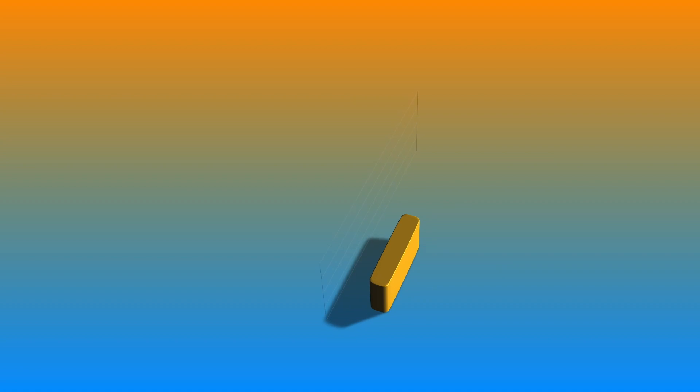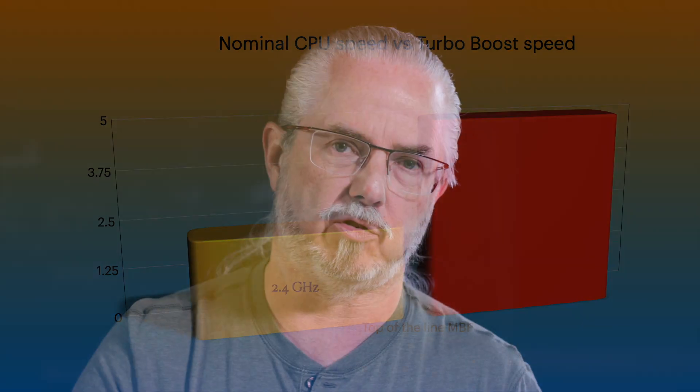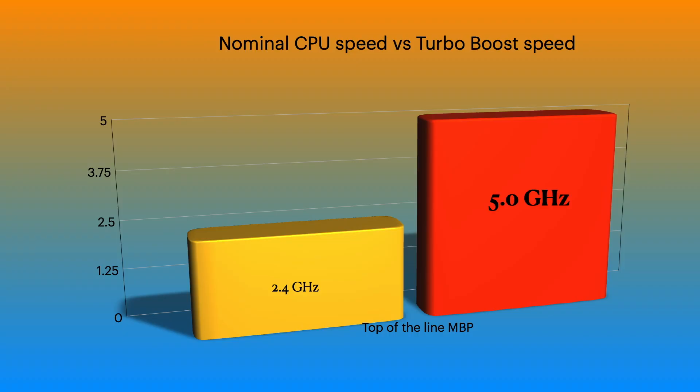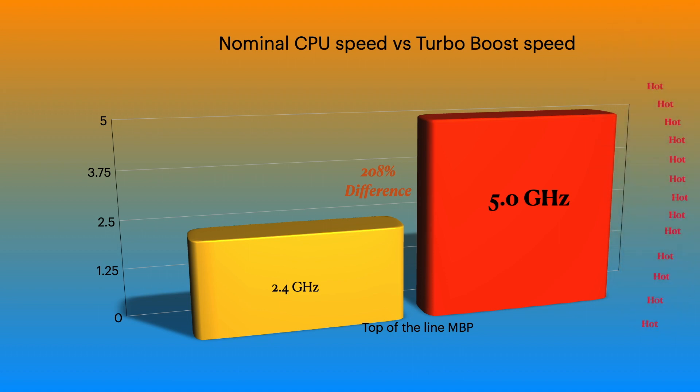With the top-of-the-line MacBook Pro, we have eight cores running at 2.4 GHz. When the Intel processor thinks it can speed up to accomplish more work more quickly, it goes up to 5 GHz — that's a 208% difference, basically doubling the speed. Again, your car engine is going to have to deal with that heat. On the 16-inch MacBook Pro, there are actually two fans that run at different speeds, each with their own temperature sensors.